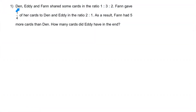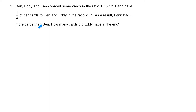Question 1. Dan, Eddie and Fan shared some cuts in the ratio 1 is to 3 is to 2. Fan gave a quarter of her cuts to Dan and Eddie in the ratio of 2 is to 1. As a result, Fan had 5 more cuts than Dan. How many cuts did Eddie have in the end?